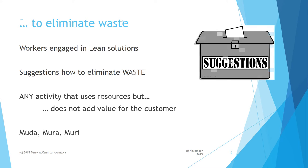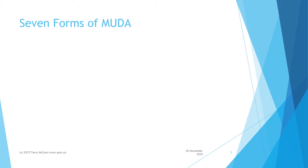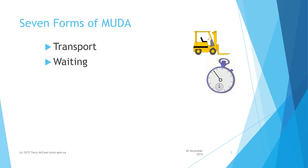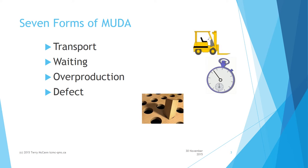TPS categorizes muda into seven forms of waste. Transport: any conveyance or movement of product or materials that does not directly add value — for example, transport from goods receiving to a storeroom and then to the production line. Waiting: anytime a worker is idle because of having to wait for some event is a waste of resource — an example would be workers waiting during retooling. Overproduction: excess product consumes resources such as storage facilities.